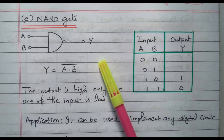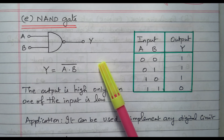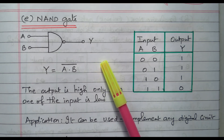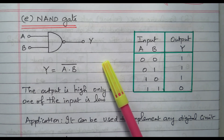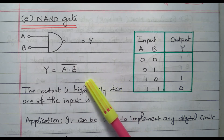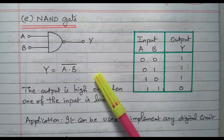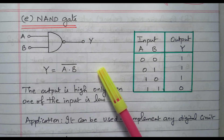There are two types of gates available. One is basic gate — OR gate, AND gate, and NOT gate are basic gates. From these basic gates we derive the other gates, that's why they are called derived gates. NAND gate, NOR gate, XOR gate, and XNOR gate come under derived gates, derived from the basic gates.